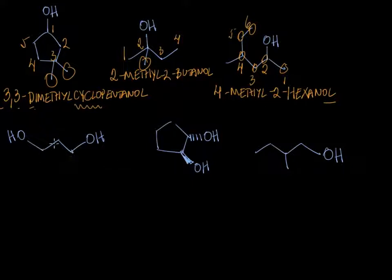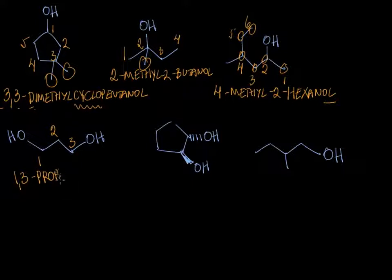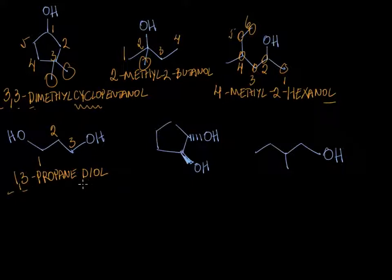Here the longest chain is easy to recognize, but we have two alcohols — how do we name this? Something like this would be 1,3-propanediol. These alcohols could be positioned at different carbons, such as carbon-1 and carbon-2, so we need two numbers for each of those alcohols.